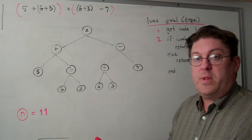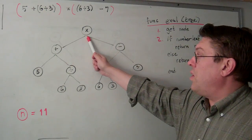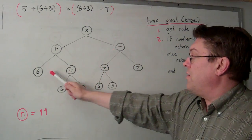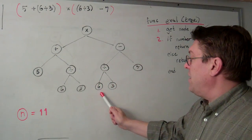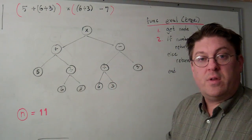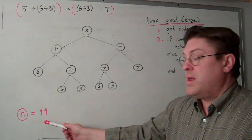How many nodes are in this particular tree? 1, 2, 3, 4, 5, 6, 7, 8, 9, 10, 11. There's 11 nodes, so n equals 11.